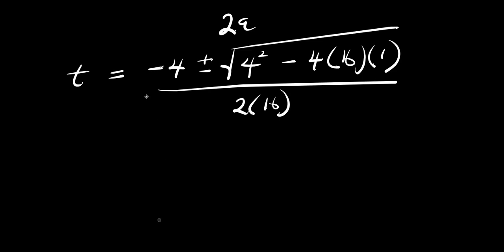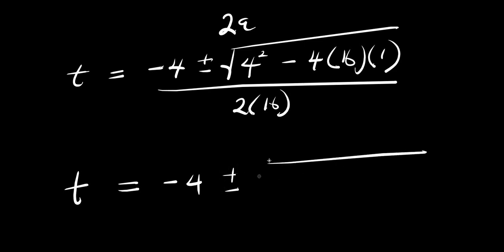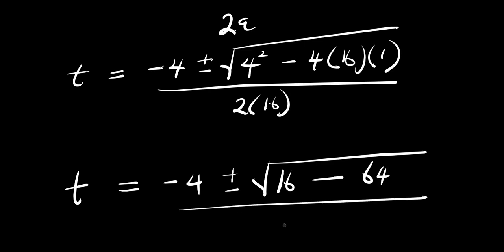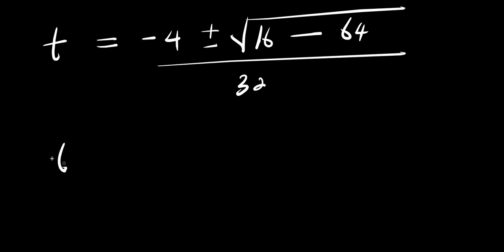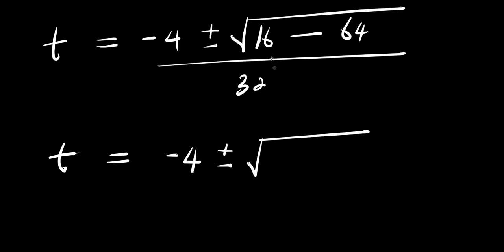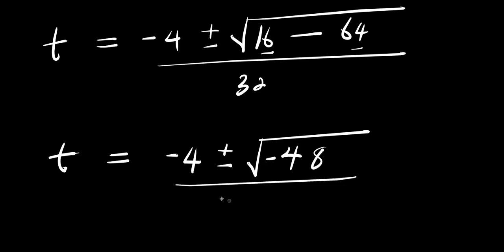So from here, what I am going to have is t equals negative 4 plus or minus square root of 4 squared — that is 16 — minus 4 times 16 times 1, that is 64. And this is divided by 2 times 16, that is 32. So we have t equals negative 4 plus or minus square root of 16 minus 64, which gives negative 48, divided by 32.